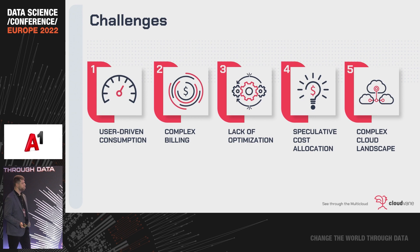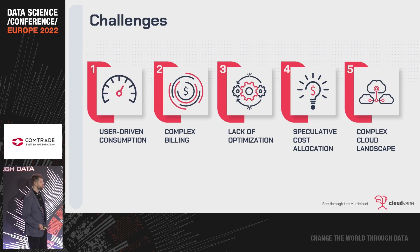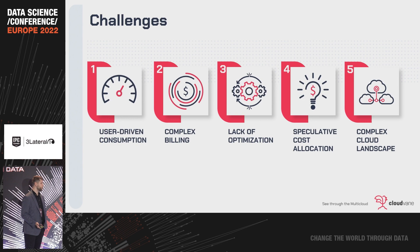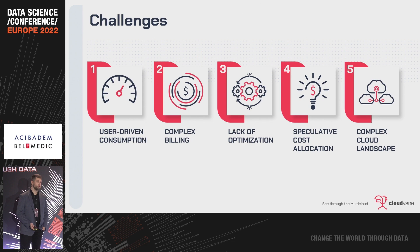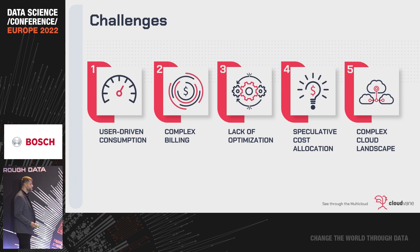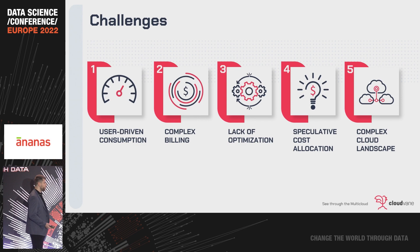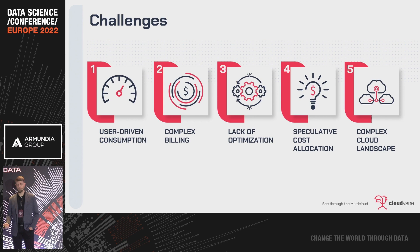Cloud is significantly different from an on-premise environment, so you really want to use only the resources you need and scale down or completely shut down resources you don't need. Doing this manually at large scale is both challenging and time-consuming. You also want to map your resources so you know at all times who's using what and why — again, very time-consuming in a large-scale multi-cloud environment. Then there's the issue of a complex cloud landscape, which means it can be challenging for a regular business person to keep up with all new services, resource types, and shapes that cloud providers constantly introduce.